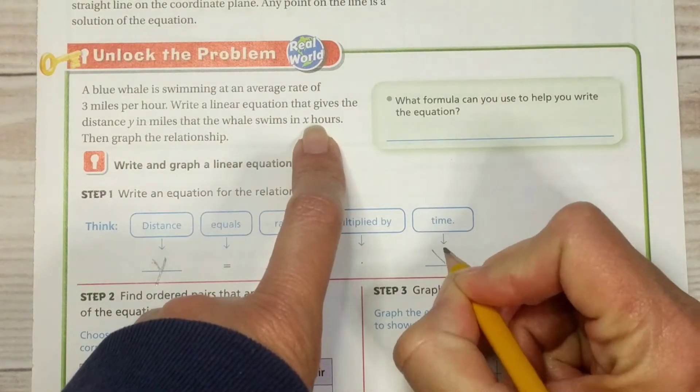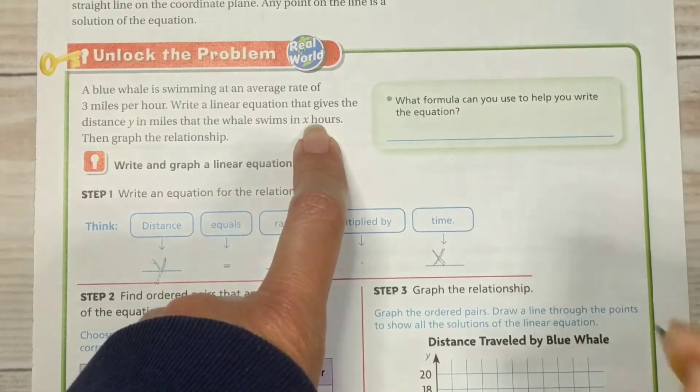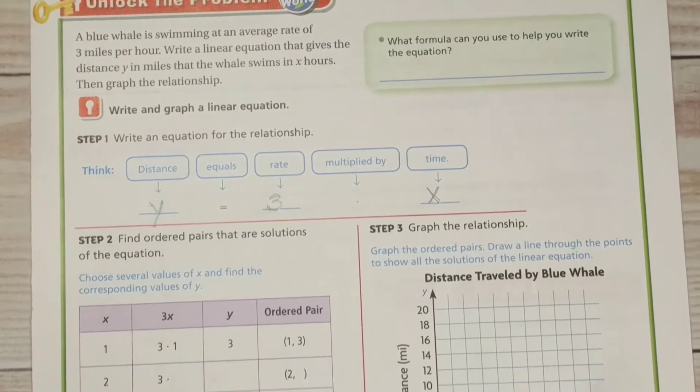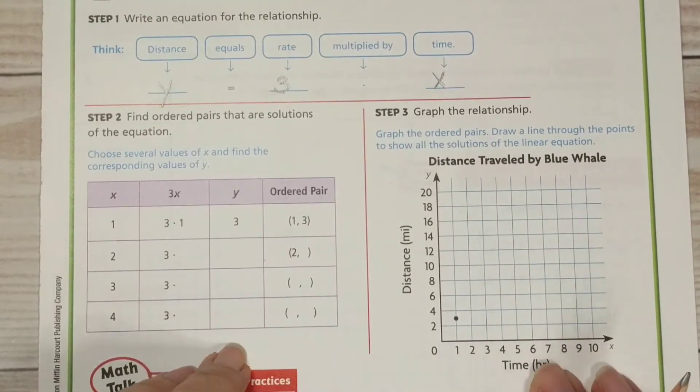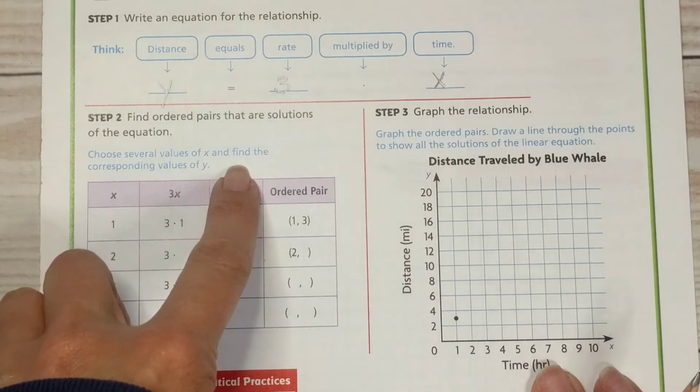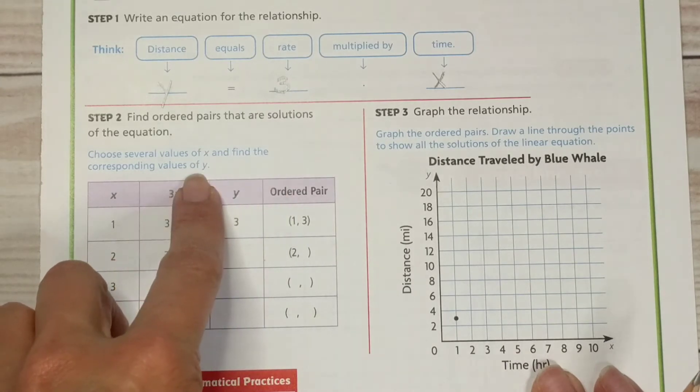We don't know how long that whale is going to be able to swim. So we don't know how far it's going to get, at least not yet. But okay, find ordered pairs that are solutions of the equation. So we're going to fill out this table here.